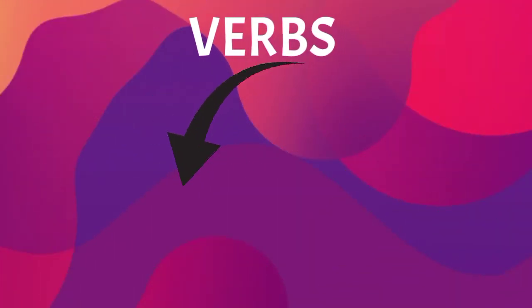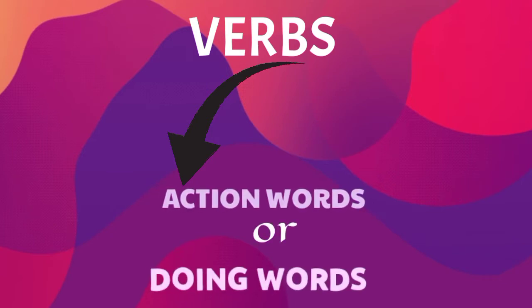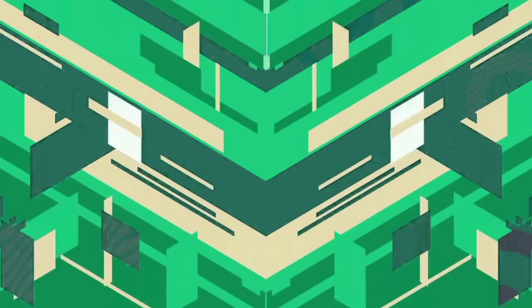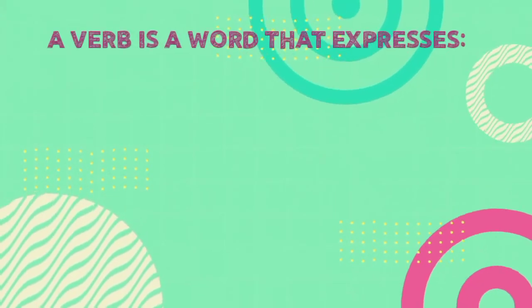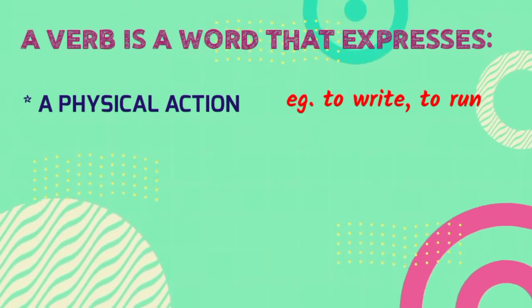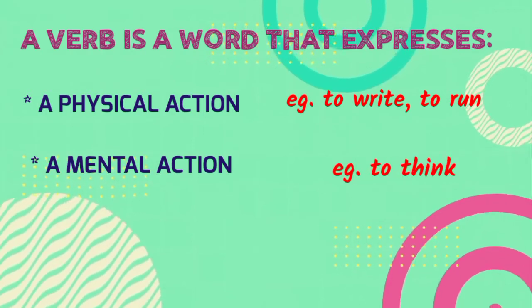Today we will learn about verbs. Verbs are also called action words or doing words. Verbs ko haam action words ya doing words bhi kehte hain. A verb is a word that expresses a physical action, for example, to write, to run.